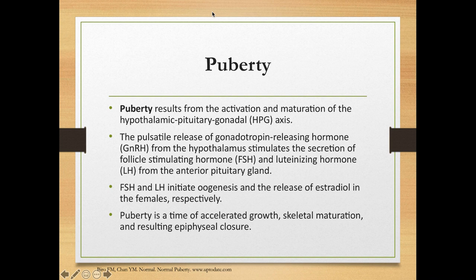Puberty results from the activation and maturation of the HPO axis. The pulsatile release of gonadotropin-releasing hormone from the hypothalamus stimulates the secretion of FSH and LH from the anterior pituitary gland. FSH and LH initiate oogenesis and the release of estradiol in females, respectively. Puberty is also a time of accelerated growth, skeletal maturation, and resulting epiphyseal closure.